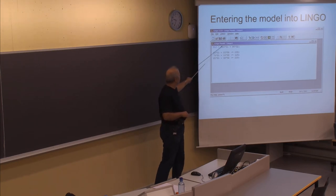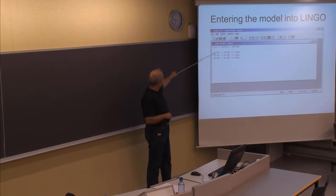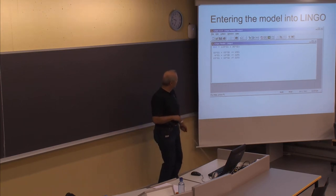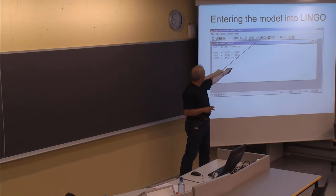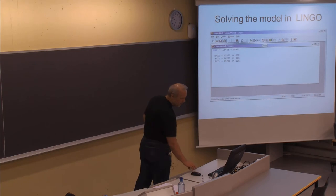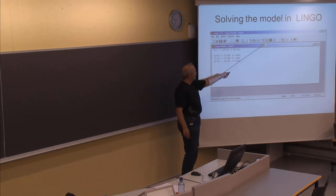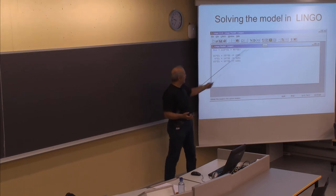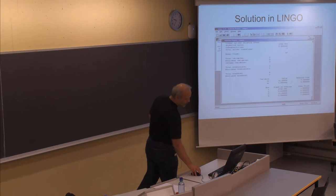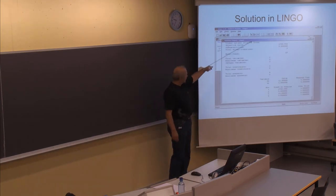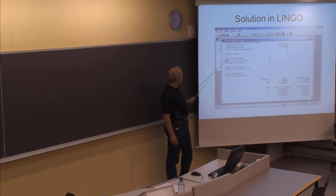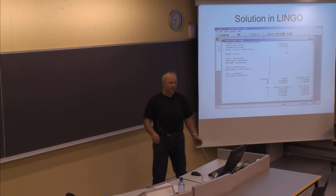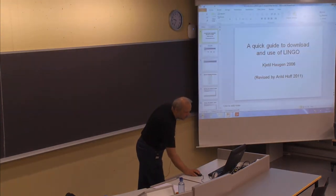To solve the model in LINGO, push the button shaped like a bullseye — you will also see 'solve' when you hover over it. Try to write the model in the given structure in this program and solve it by pushing this button. You will get a solution showing the objective value — the optimal solution of this example is 1740 — and the values of the parameters. We'll come back to the LINGO program and LP problems probably next week.